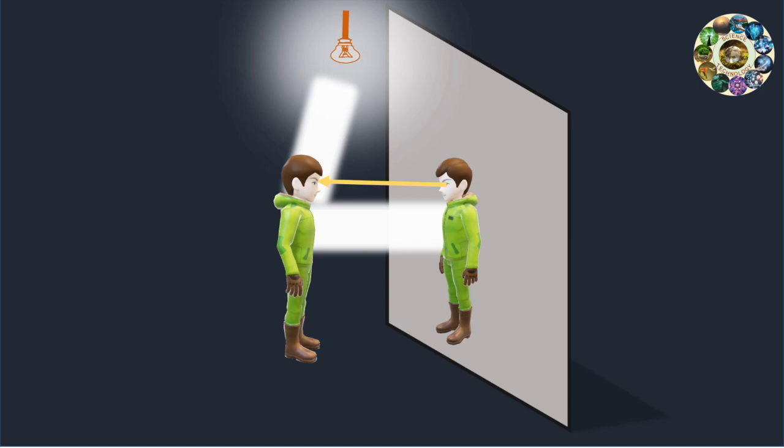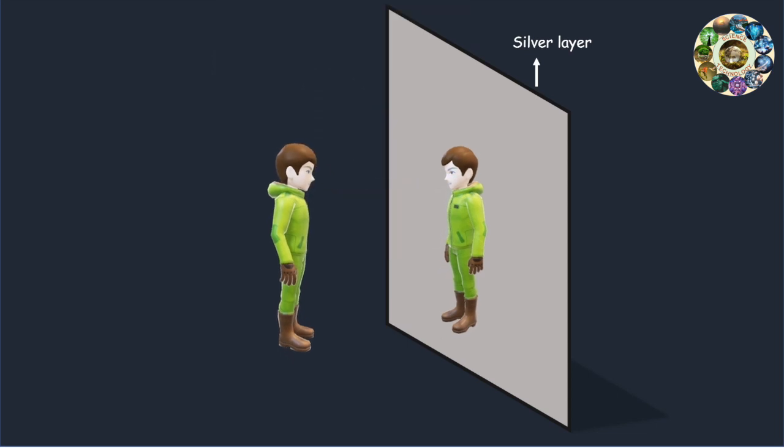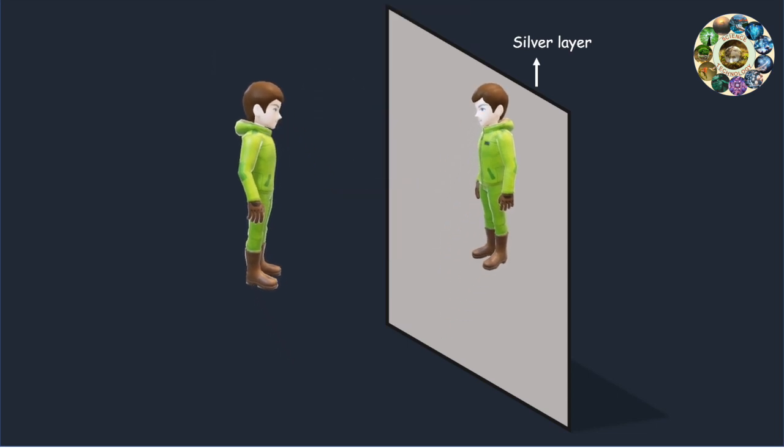How a mirror produces an image: Mirror implies a glass surface with a silver backing that produces image through reflection. Images are seen in mirrors as the result of reflected light. The many light rays which originate at the object location reflect off the mirror and travel to each observer's eye.